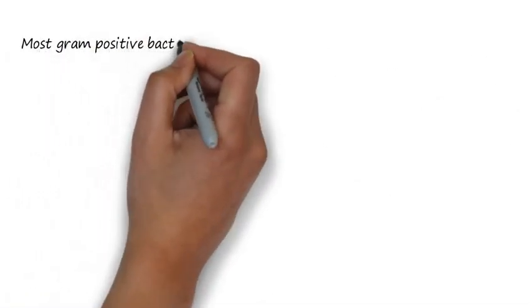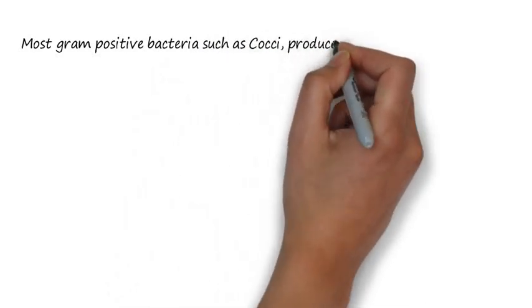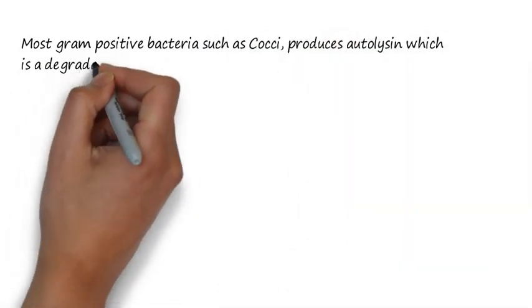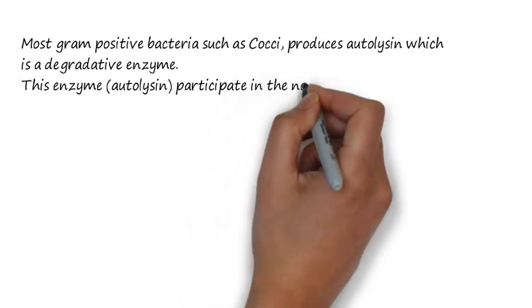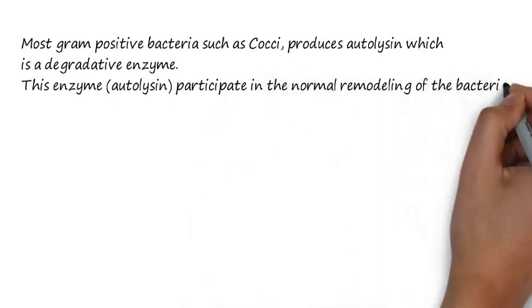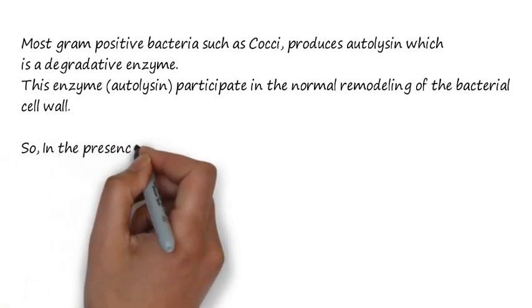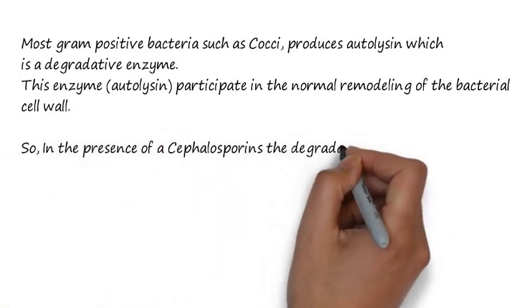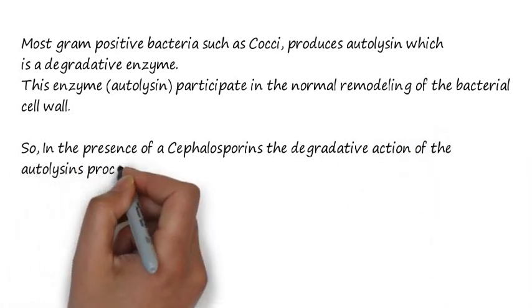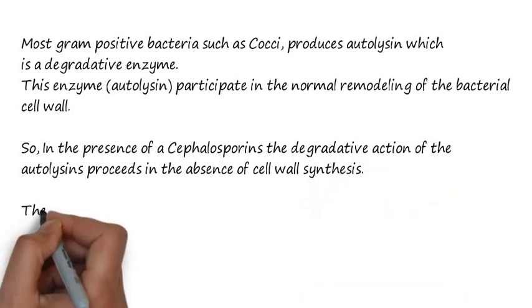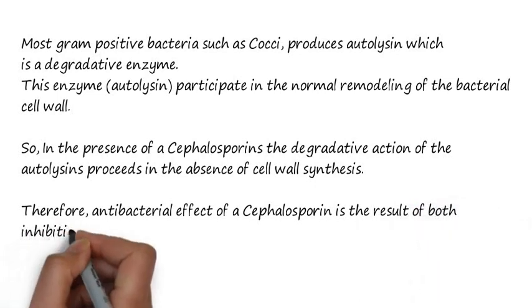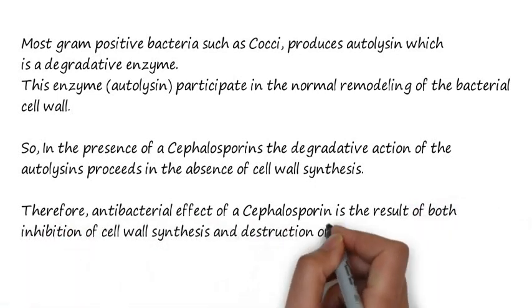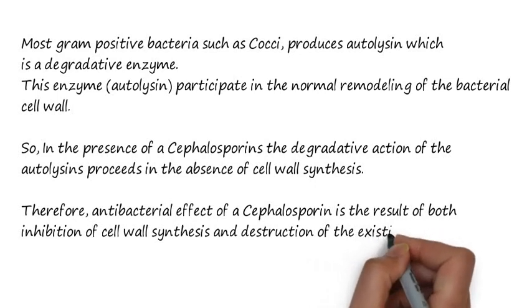Cephalosporins inhibit synthesis of the cell wall by binding to penicillin binding proteins, inhibiting the transpeptidase-catalyzed reaction and preventing the formation of cross-links essential for cell wall integrity. Most gram-positive bacteria such as cocci produce autolysin, a degradative enzyme that normally participates in the remodeling of the bacterial cell wall. In the presence of cephalosporins, the degradative action of autolysin proceeds in the absence of cell wall synthesis, so the antibacterial effect is the result of both inhibition of cell wall synthesis and destruction of the existing cell wall.